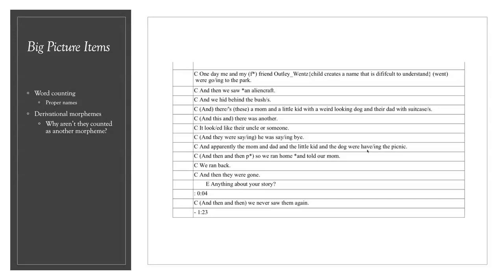For word counts, proper names like character names, place names such as 'Morgantown_West_Virginia,' or movie titles like 'The_Princess_Bride' use underscores so SALT counts them as a single morpheme. Standard practice in language sample analysis is not to count these as multiple separate words, since the student treats them as a single name.